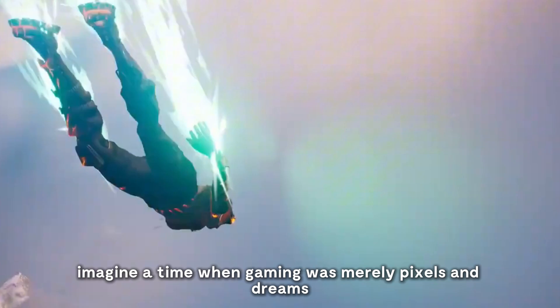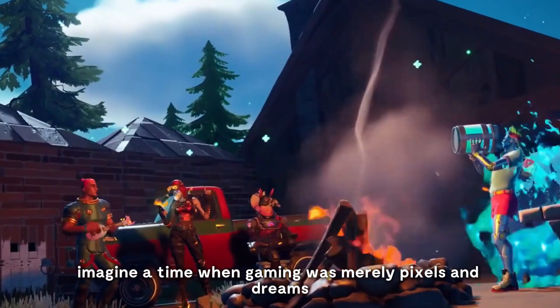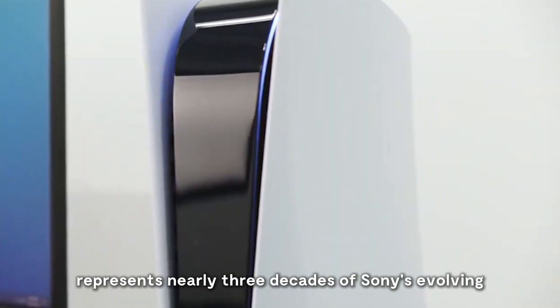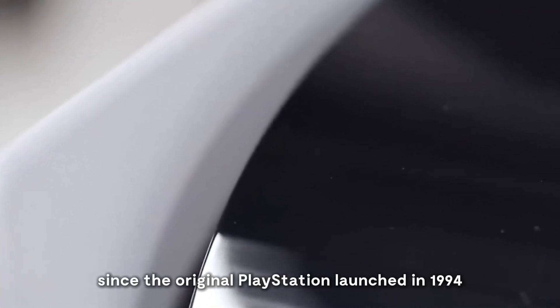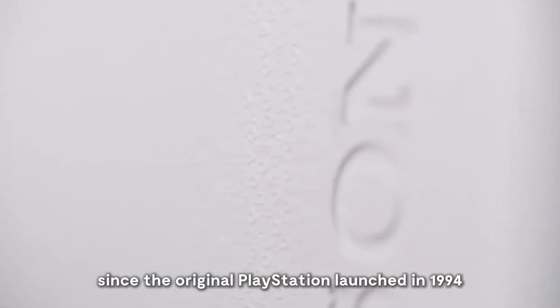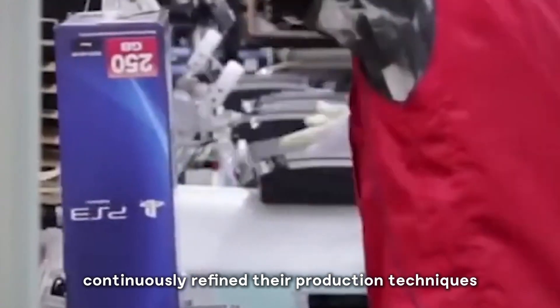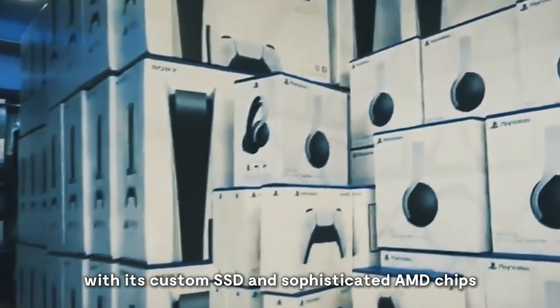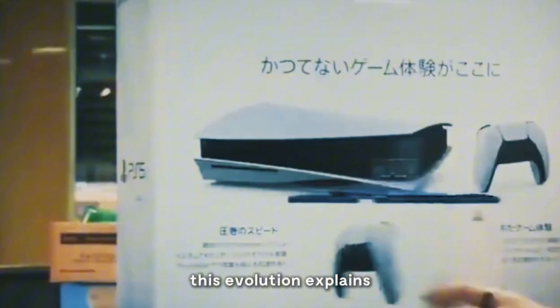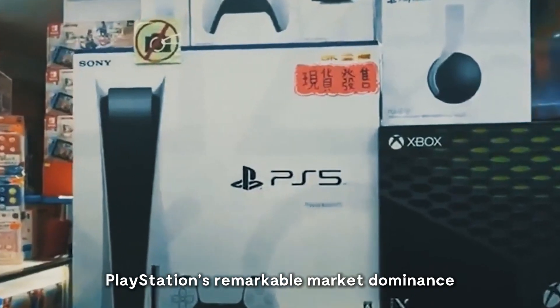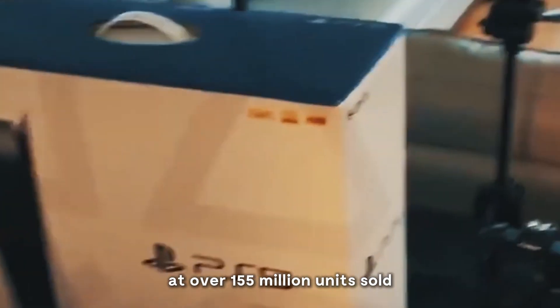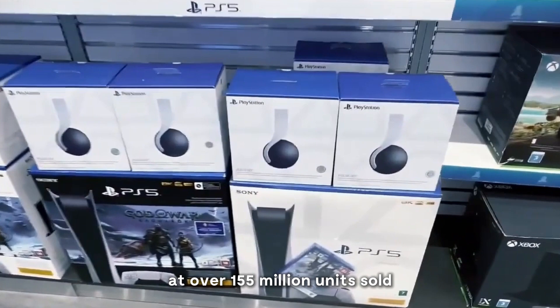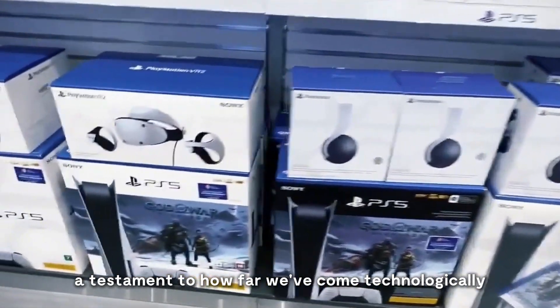Imagine a time when gaming was merely pixels and dreams. That PlayStation in your living room represents nearly three decades of Sony's evolving manufacturing expertise. Since the original PlayStation launched in 1994, Sony has continuously refined their production techniques, culminating in today's PS5 with its custom SSD and sophisticated AMD chips. This evolution explains PlayStation's remarkable market dominance, with the PlayStation 2 still holding the title of best-selling console ever at over 155 million units sold, a testament to how far we've come technologically.